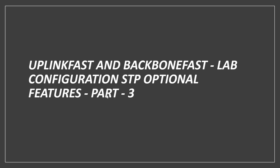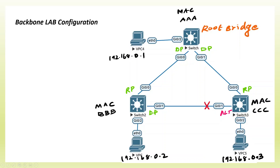We will test the L2 switch. This is the Root Bridge and this is the non-root bridge. We have IP address 192.168.0.1. After the switch number, we will configure .1, .2, and .3. We will test the Root Bridge. This is the blocking port.